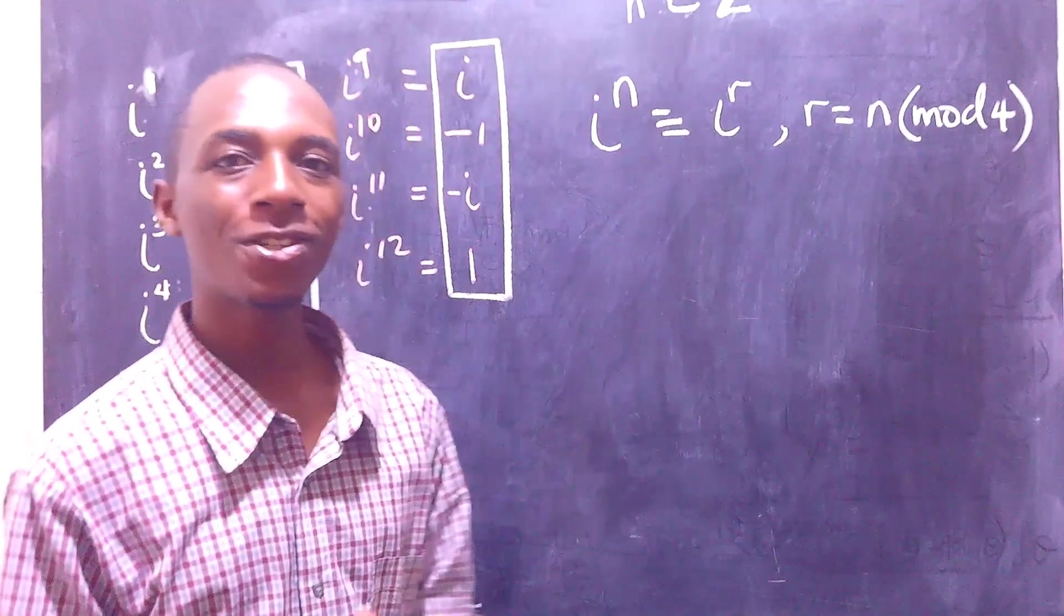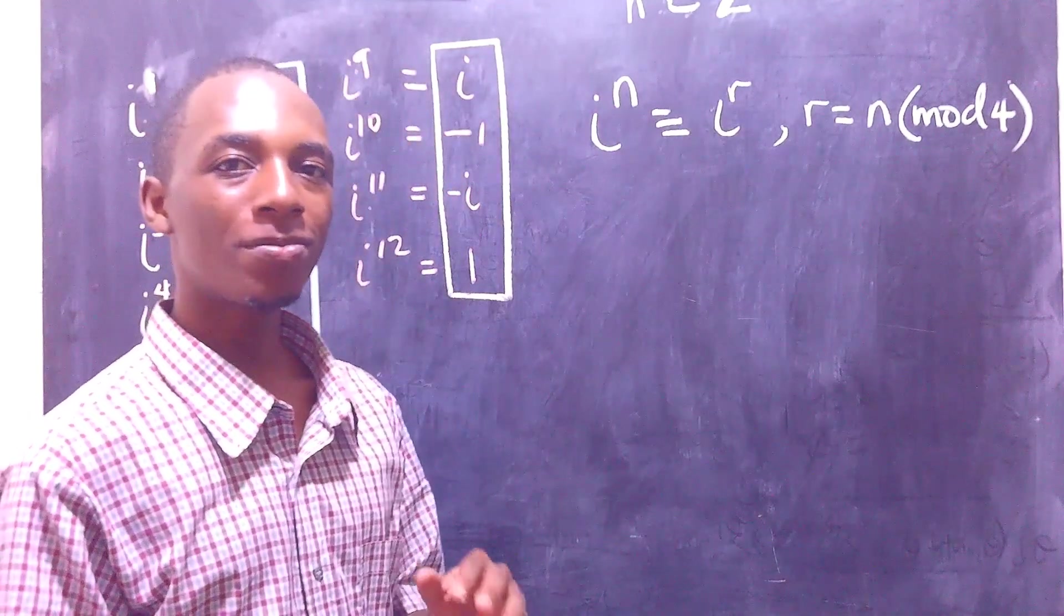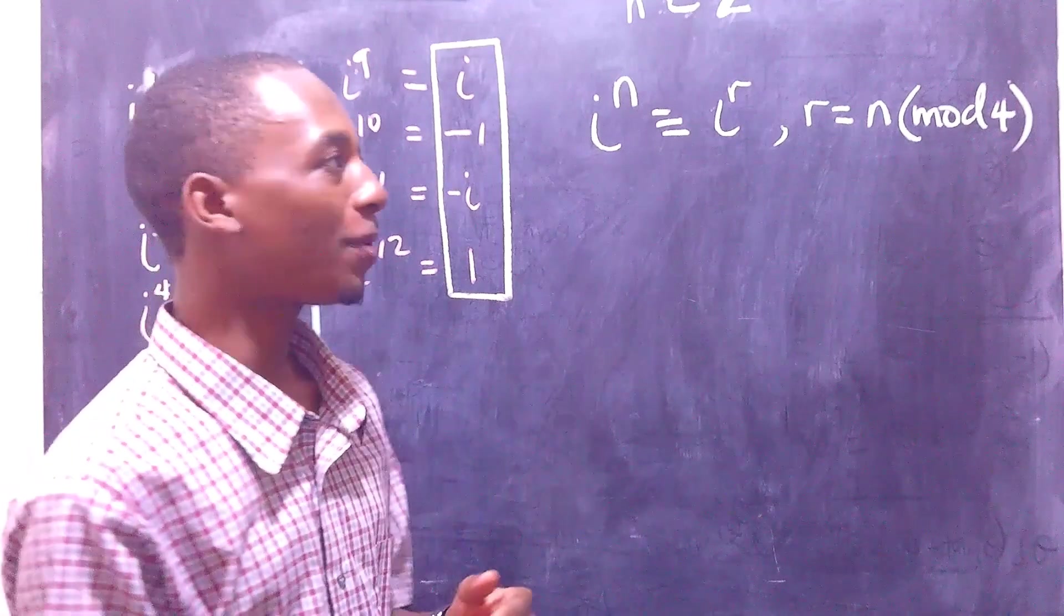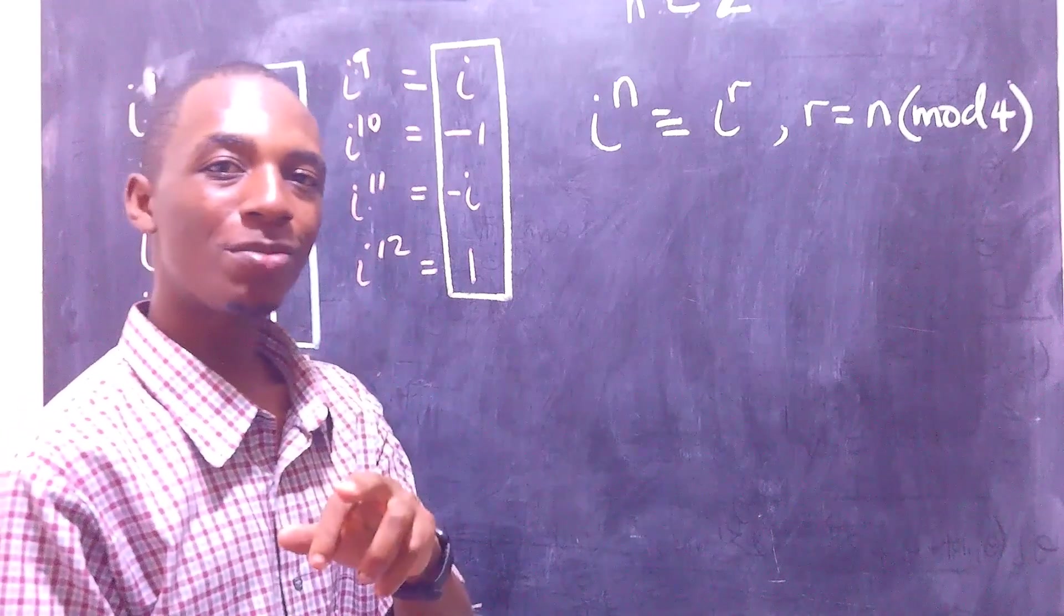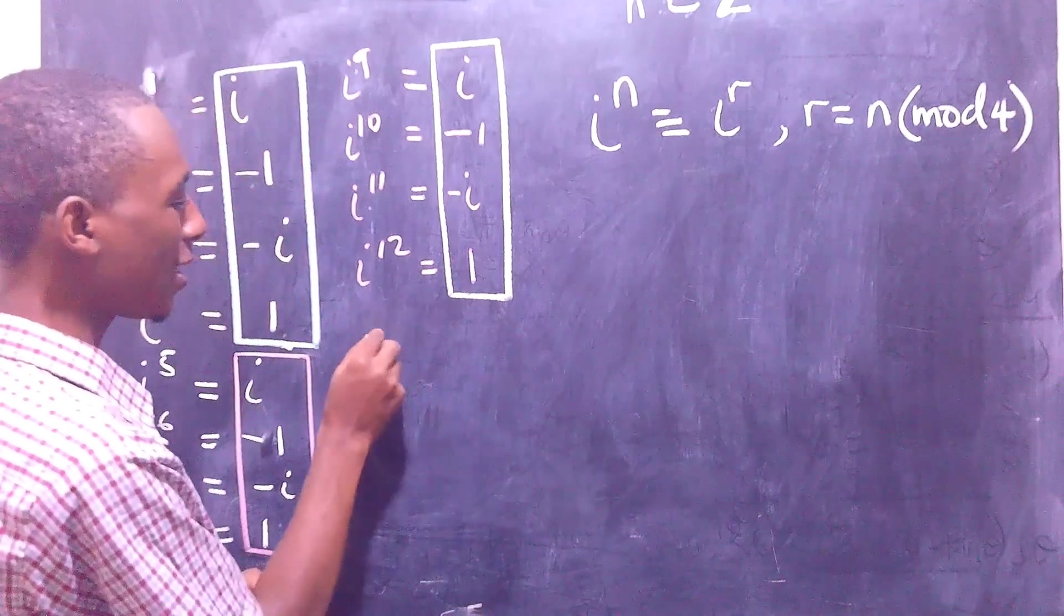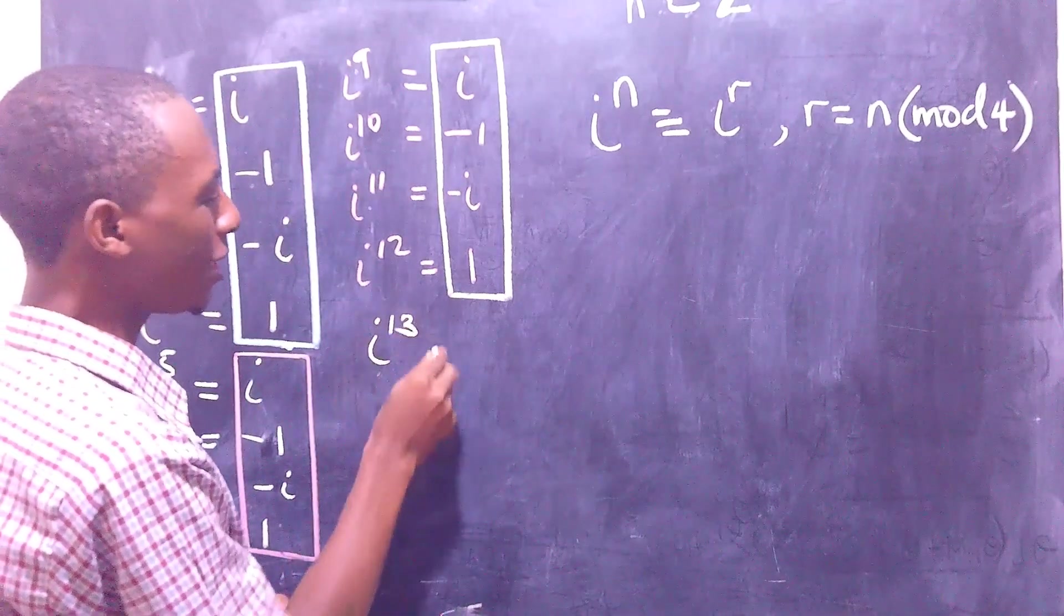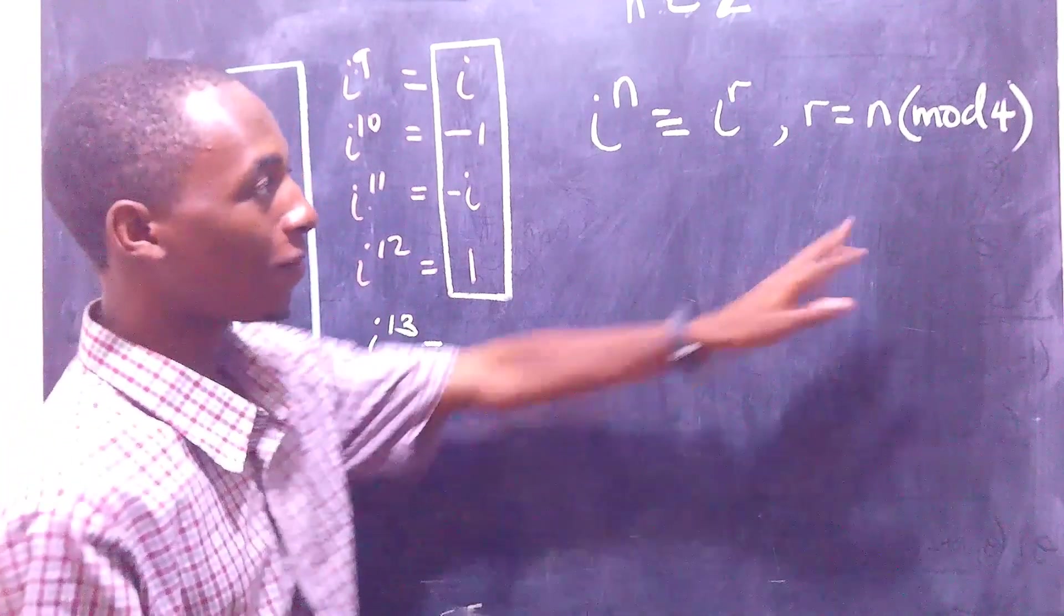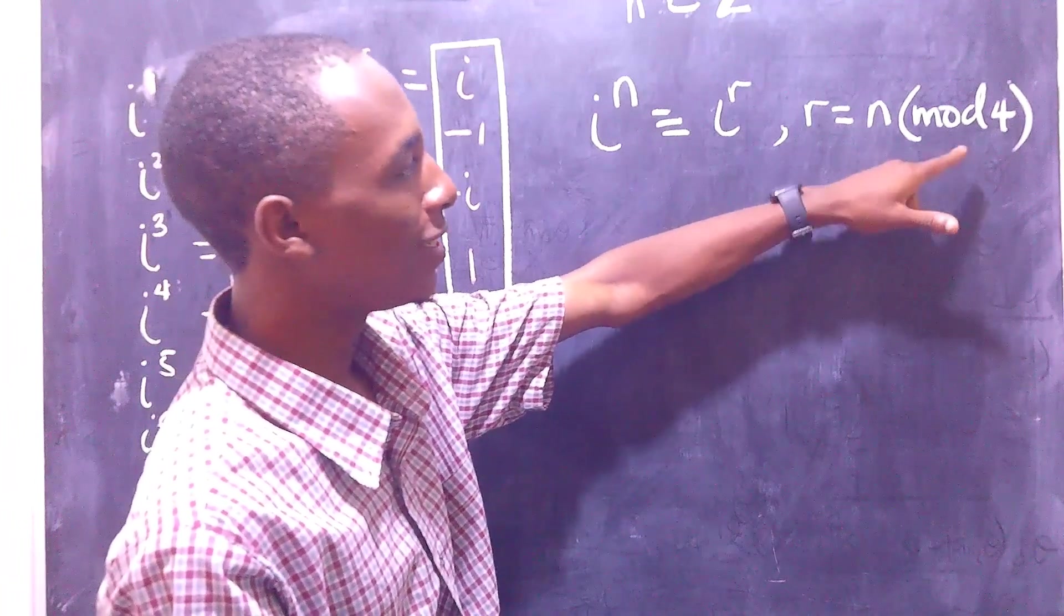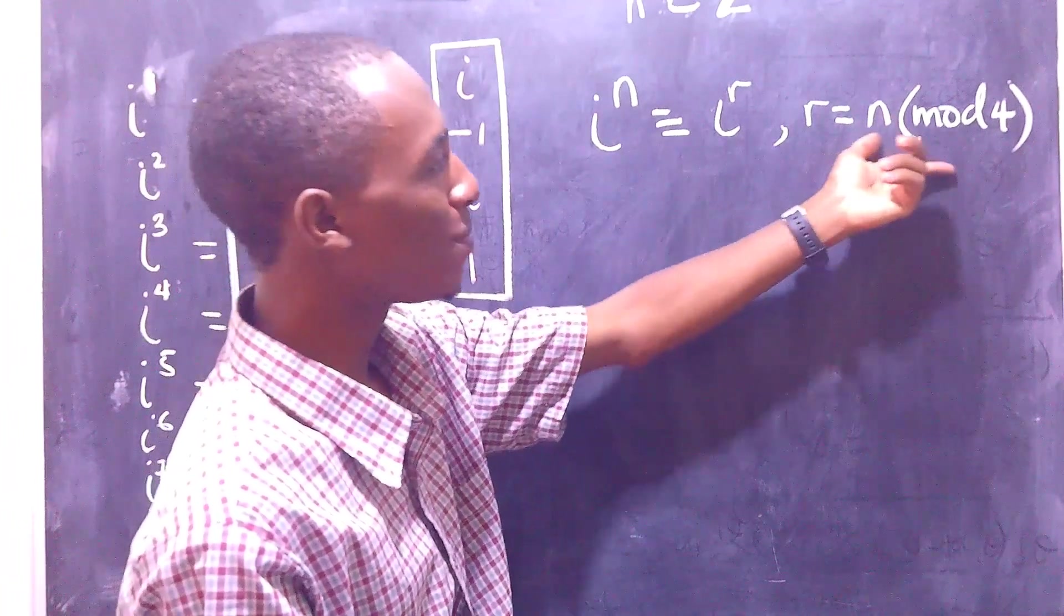Now, let's test it with some relatively higher power and see how that works. Let me start off with something that is going to be very easy for us to prove. Let's say i to the power 13. So, i to the power 13, of course I didn't talk about what this means.